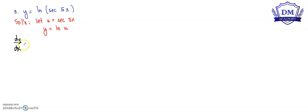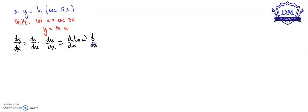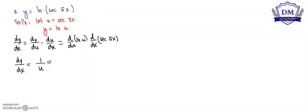So dy/dx is equal to dy/du multiplied by du/dx. This is equal to the derivative of y with respect to u, which is ln of u, multiplied by the d/dx of u, which is secant 5x. So dy/dx is equal to the derivative of ln of u, which is 1 over u.